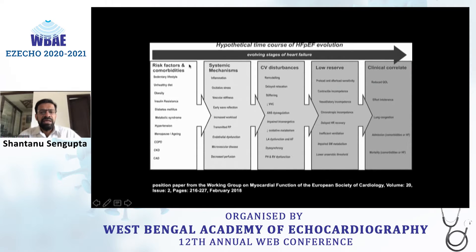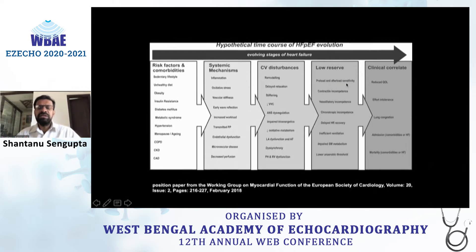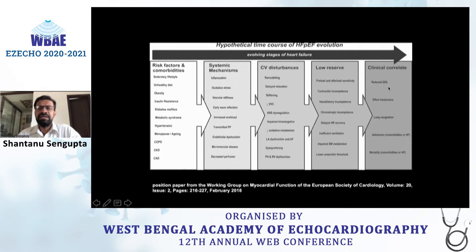This can be translated into the evolution of HFpEF. Looking at the time course, there are comorbidities that precipitate HFpEF: sedentary lifestyle, poor diet, obesity, metabolic syndrome, hypertension, and coronary artery disease. These initiate systemic mechanisms of inflammation, oxidative stress, microvascular dysfunction, and cardiovascular remodeling, with impaired relaxation, left atrial involvement, dyssynchrony, right-sided involvement, chronotropic incompetence, and alterations in preload and afterload — ultimately resulting in a clinical syndrome of poor quality of life, effort intolerance, pulmonary edema, and recurrent admissions.